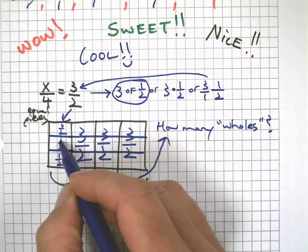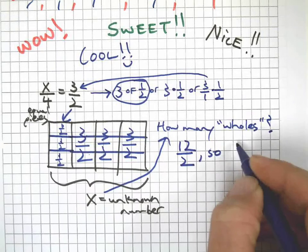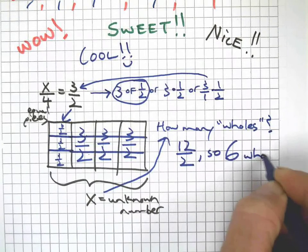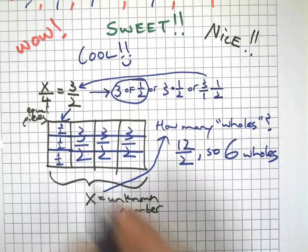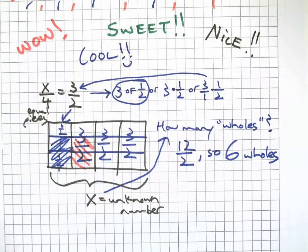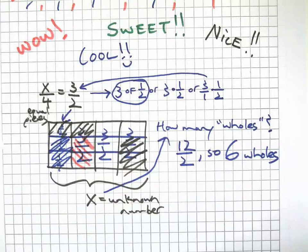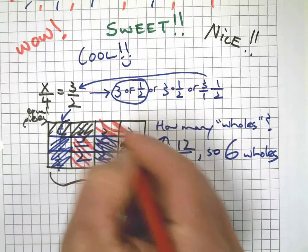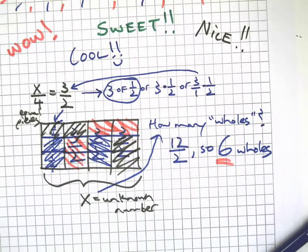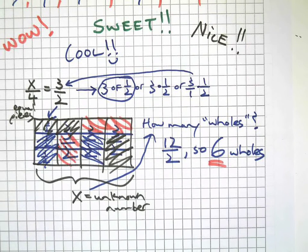Well, let's add them up. Three, six, nine, ten, eleven, twelve. There's twelve halves, so there's six wholes. There's a whole. Let's use multiple colors here. Two, three, four, five, six. Six wholes, so the answer is six.